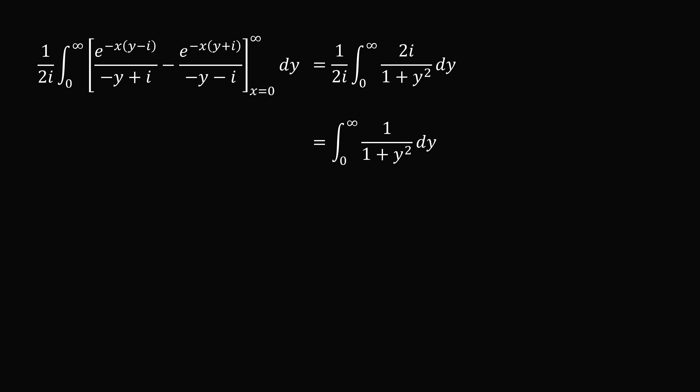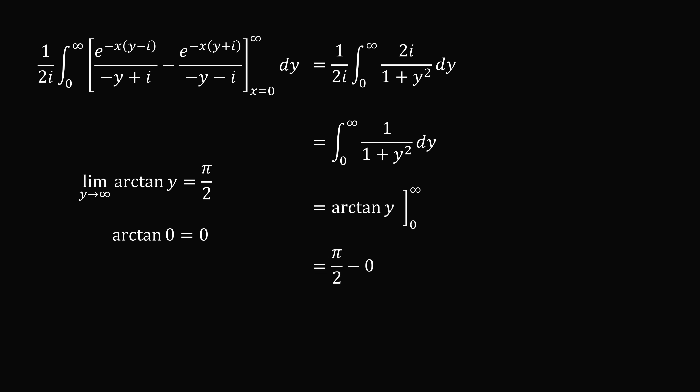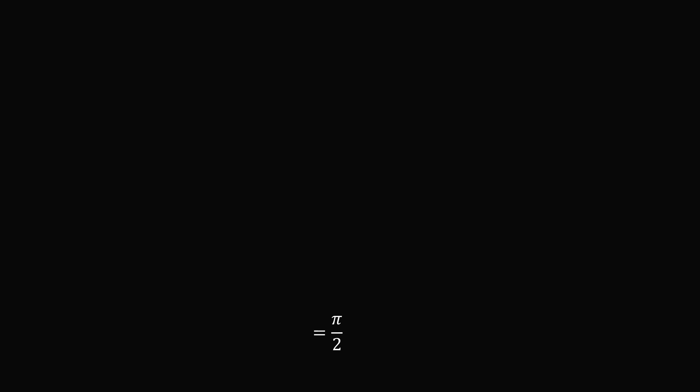So this integral equals 1 divided by 2i multiplied by the integral from 0 to infinity of 2i divided by 1 plus y squared dy. The 2i terms cancel, giving the integral from 0 to infinity of 1 divided by 1 plus y squared dy. This is a standard integral equal to the arctangent of y, evaluated from 0 to infinity. The limit as y goes to infinity of arctangent y is pi over 2, and arctangent of 0 is 0. So we get pi over 2 minus 0, which equals pi over 2. Thus the integral from 0 to infinity of sine x divided by x dx equals pi over 2.